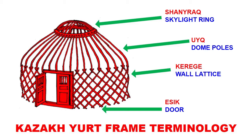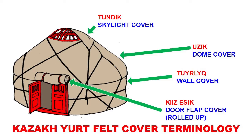These terms are from the Kazakh language, but pretty much all other Turkic peoples who used yurts would use very similar terms, sounding more or less similar to Kazakh. The door flap cover shown rolled up here is called kiizyesik, which literally means felt door. The wall cover is called turliq. The dome cover is called uzuq. And the skylight cover is called tunduk.